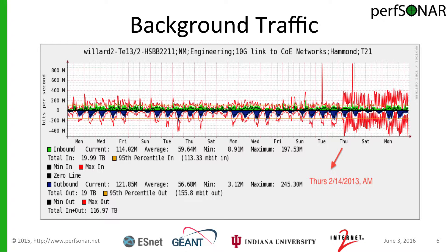This shows the data rates before and after the change that we made to the network. As you can see, there was a lot of pent-up demand that was not being met because of this setting on the enterprise firewall. Data rates returned to expected levels after this change was implemented.